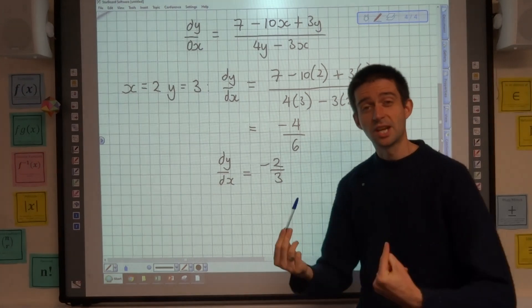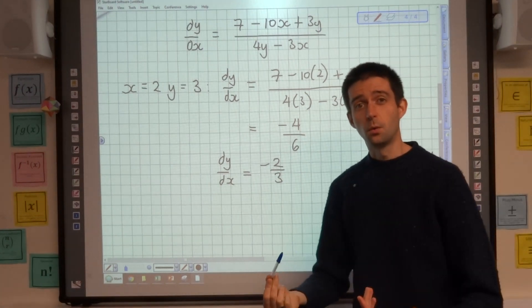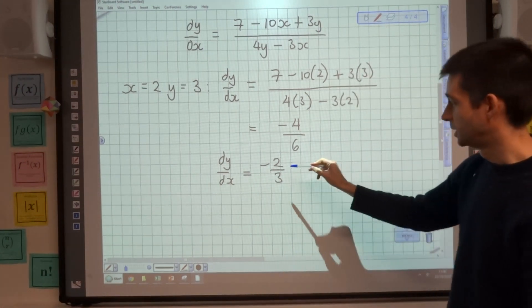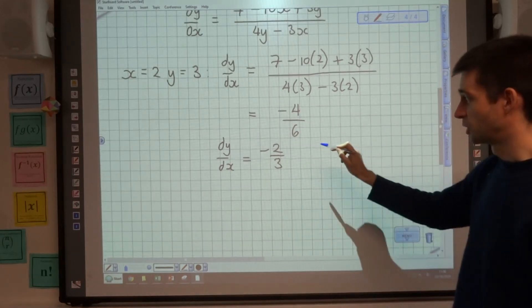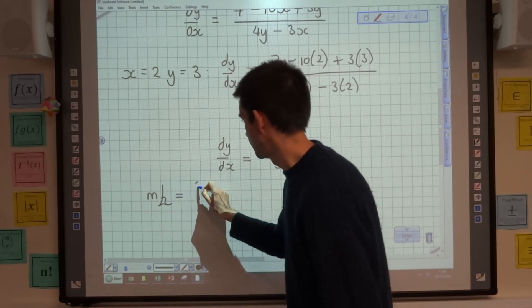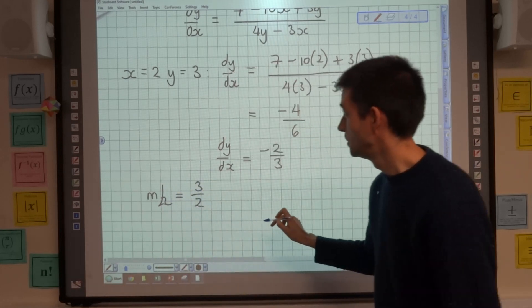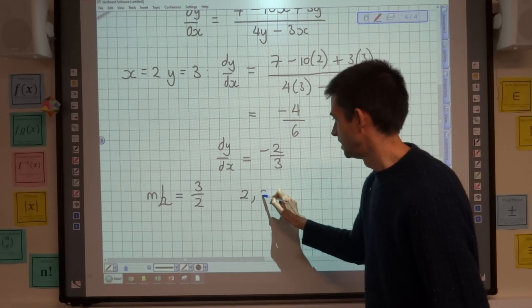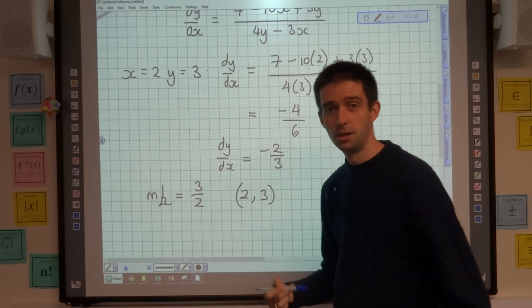Now, crucially, that's going to be the gradient of the tangent. I've been asked for the equation of the normal, so what I'm going to need to do is take the negative reciprocal of that value to get that the perpendicular gradient is going to be 3/2. And I'll just remind myself at this point that it's passing through the point (2, 3).